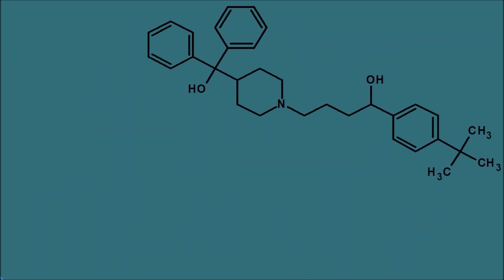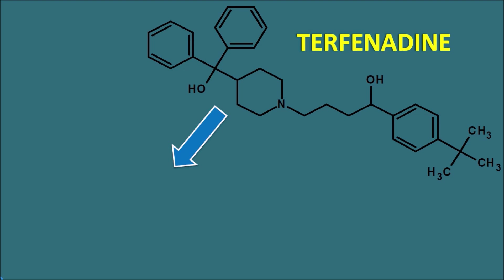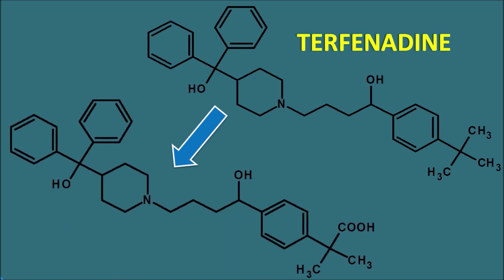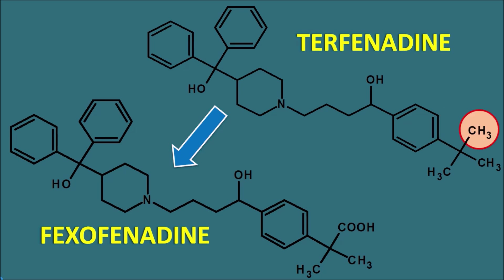Let us look at another structure. This is not fexofenadine — this is the related drug terfenadine. When terfenadine is administered within the body, it is converted into fexofenadine. In this way, terfenadine is metabolized to fexofenadine. The small difference between them is that in terfenadine a methyl group is present at a certain position, but in fexofenadine a COOH carboxylic acid group is present. So in this reaction, terfenadine is converted into fexofenadine by an oxidation reaction.